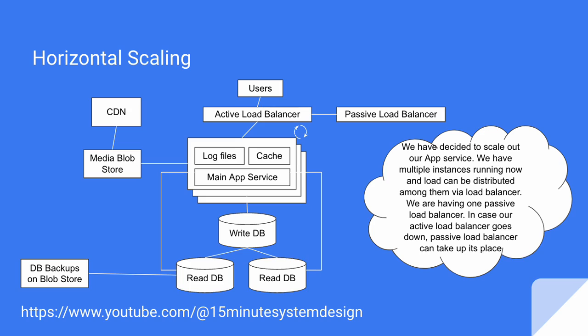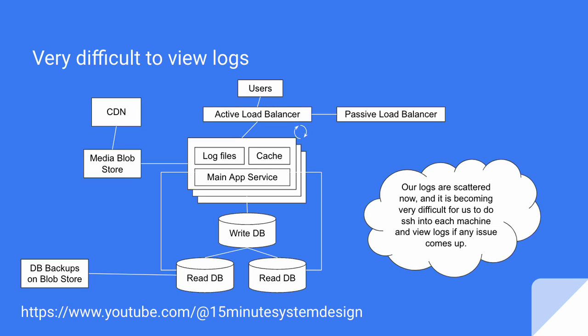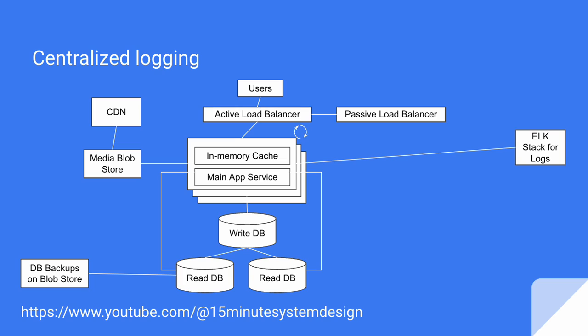At this point, it seems like we have no single point of failure and we would be able to scale this service to millions of users. But if something goes wrong, it will be difficult to view logs — our logs are scattered across machines and it becomes very difficult to SSH into each machine to view log files. To handle this, we decide to go with centralized logging using the ELK stack.